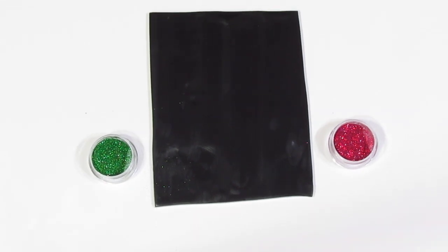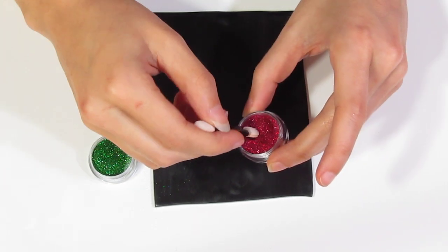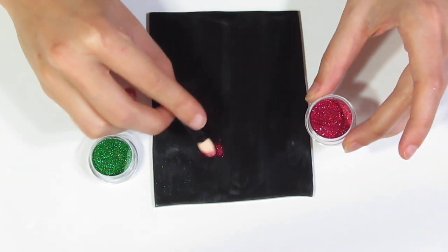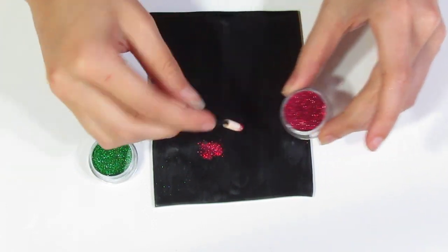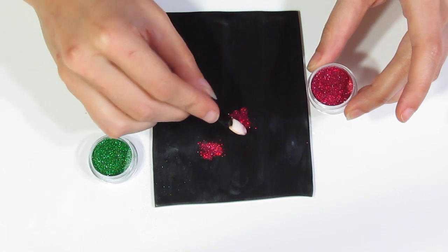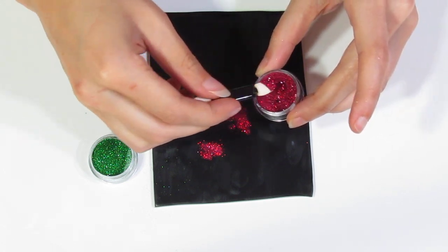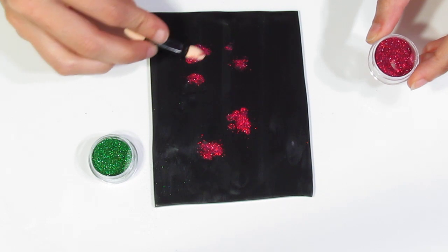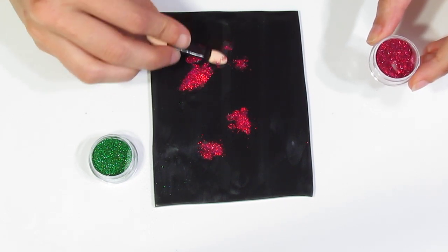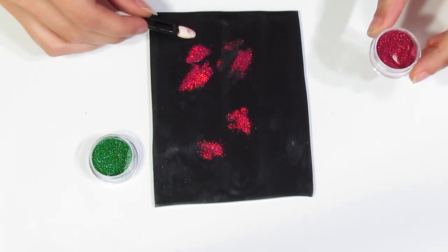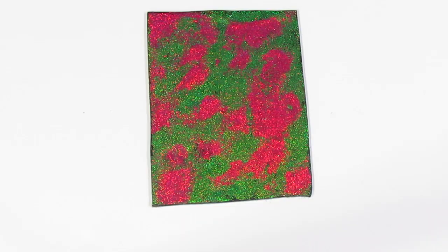Okay and I'm just going to take this, I'm just going to dab that over the surface like so and I'll do that with the green as well until I've mostly covered the surface. Okay, there we go.